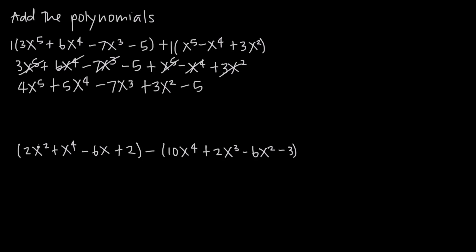Now looking at our second example, we want to do the same thing. We've been given two polynomials, each enclosed in parentheses, and we want to get them outside of the parentheses. In front of our first polynomial, we have an implied positive 1. We distribute that across each of the terms inside the parentheses, and we get 2x squared plus x to the fourth minus 6x plus 2.